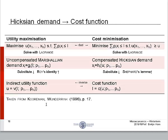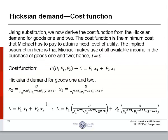Now we are moving from compensated Hicksian demand to the cost function. The word compensated is used to indicate the compensation that the individual receives in order to purchase a bundle of goods on their indifference curve. Using substitution, we now derive the cost function from the Hicksian demand for goods 1 and 2.